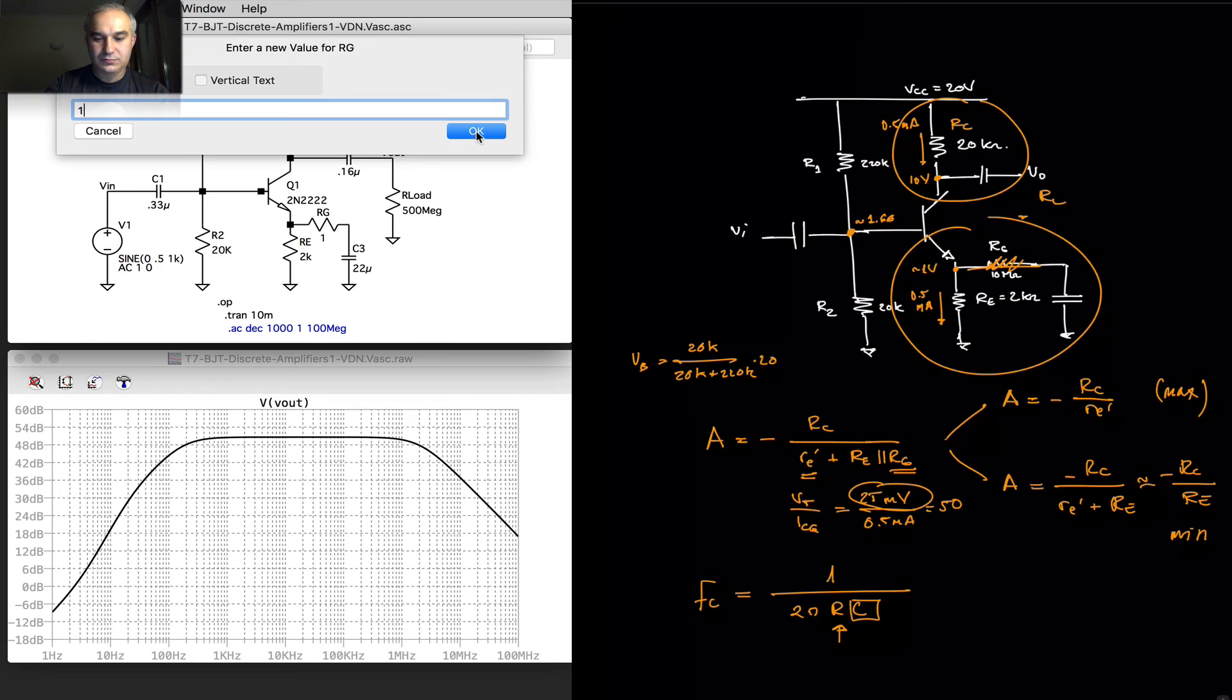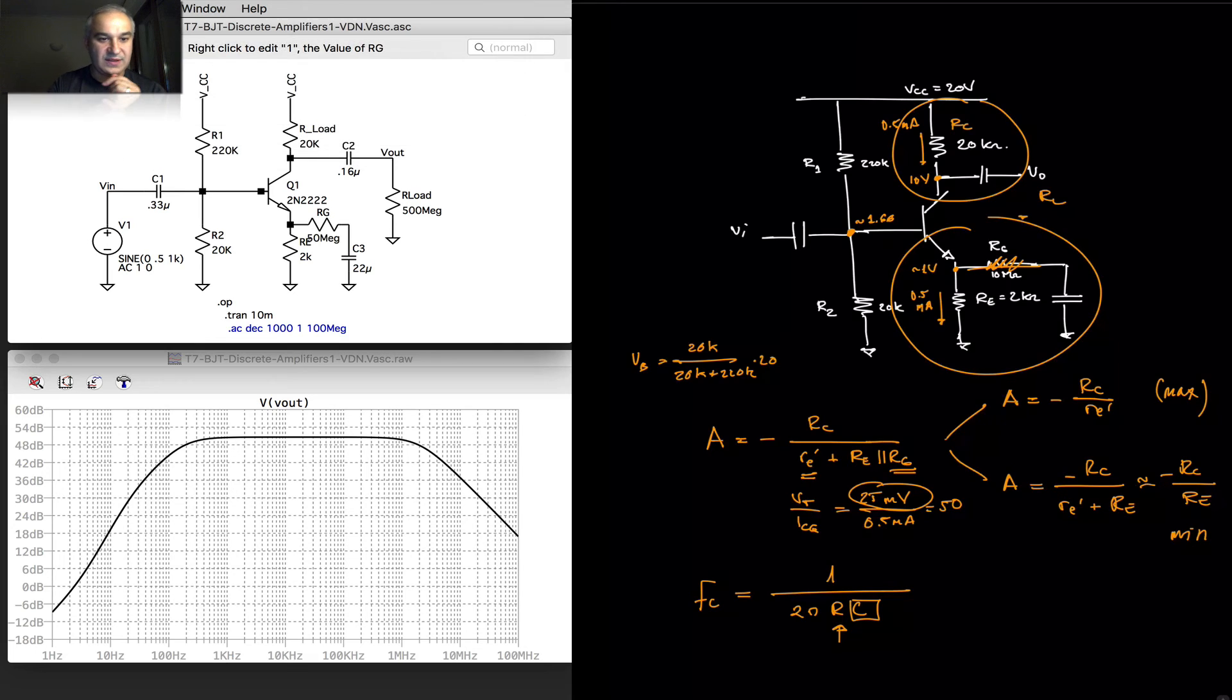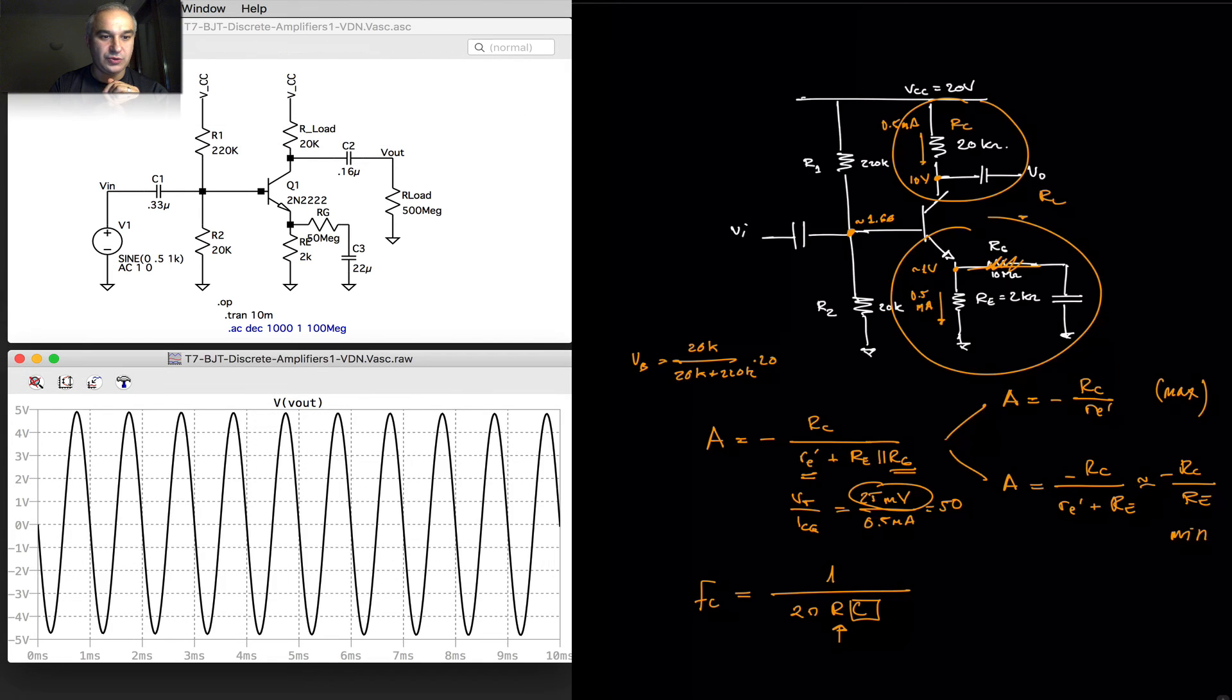Let's start with the 10 meg that we had before, or the 50 meg. In that case, our gain is going to be at the output. So, we have our input and our output. 0.5 volts at the input, 5 volts at the output, the gain of 10. Let's increase it.